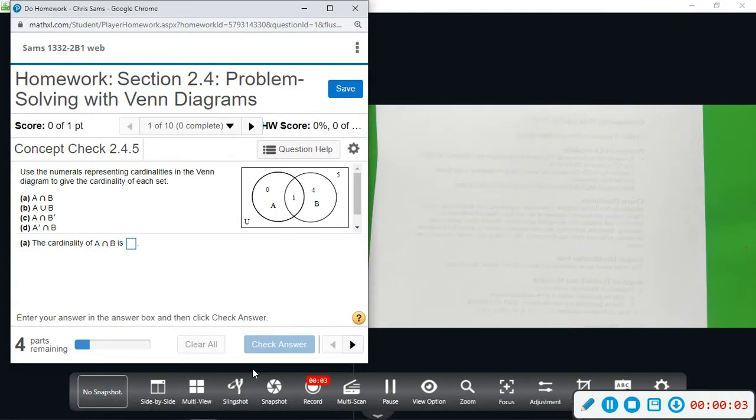All right, so we're in section 2-4. We're going to be looking at Venn diagrams. This first question has five parts, and it says four parts are remaining. We want to use the numerals representing cardinalities in the Venn diagram to give the cardinality of each set. Cardinality is just referring to the number of elements in that set.